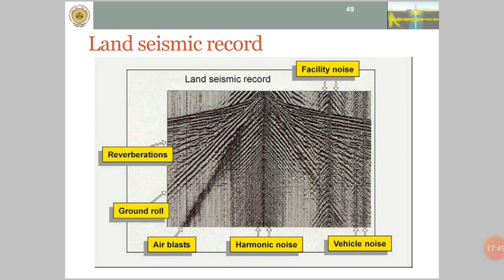In a land seismic record, we can have various types of noise like facility noise which we have seen here, reverberation, ground roll, air blast, harmonic noise, and vehicle noise. All these noise need to be removed from the data in order to have meaningful interpretation.